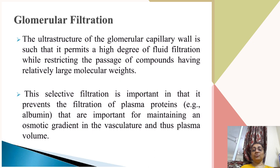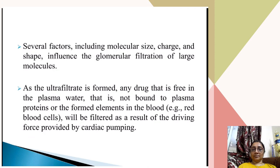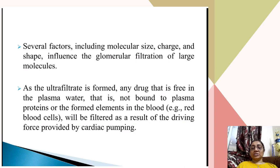The ultrastructure of the glomerular capillary wall permits a high degree of fluid filtration while restricting the passage of compounds with relatively large molecules. This selective filtration prevents filtration of plasma proteins like albumin, which are important for maintaining the osmotic gradient in the vasculature and plasma volume. Several factors including molecular size, charge, and shape influence glomerular filtration. Any drug that is free in plasma water and not bound to plasma protein will be filtered by the driving force of the cardiac pump.